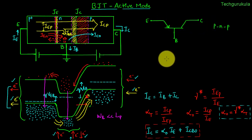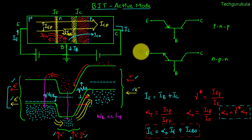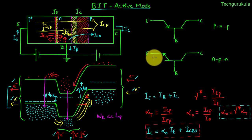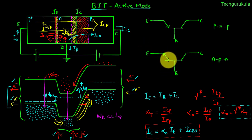For an NPN transistor, the circuit symbol looks similar but the arrow mark points outward. In an NPN transistor, the emitter is N-type and the base is P-type. To forward bias the emitter-base junction, we apply a lower potential to the emitter compared to the base, so the current flows outward.